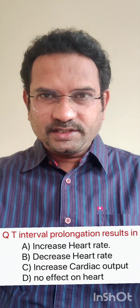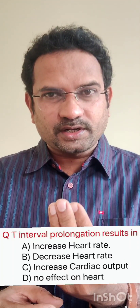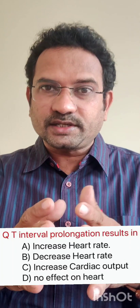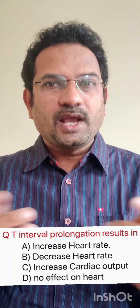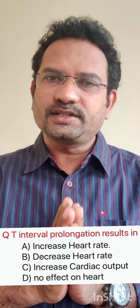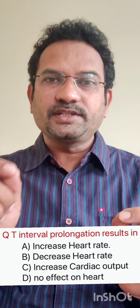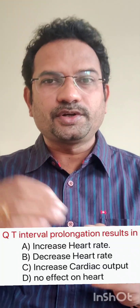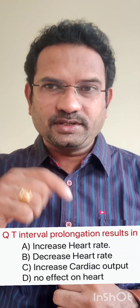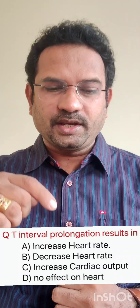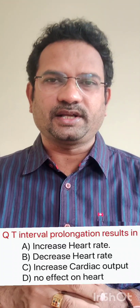If the length is increased, the time taken for ventricular contraction and relaxation is increased. So heart rate decreases. QT prolongation is inversely proportional to heart rate. So option B, decreased heart rate, is the correct answer.